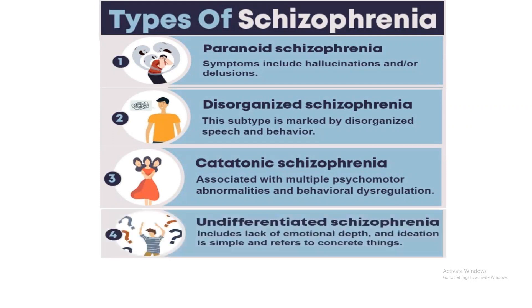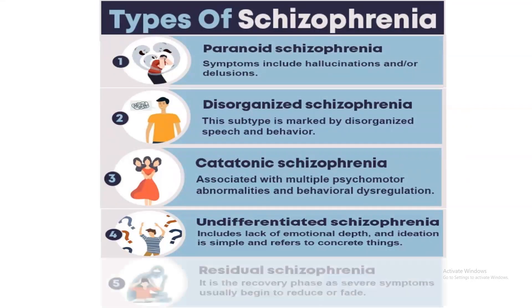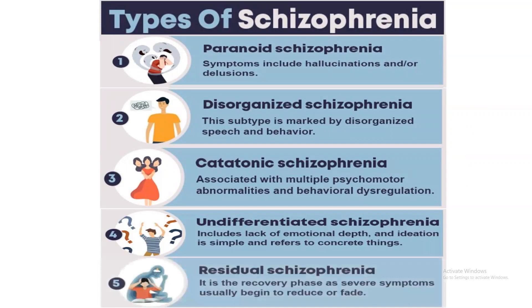Undifferentiated schizophrenia includes lack of emotional depth and ideation is simple, referring to concrete things only. Then there is residual schizophrenia, which is the recovery phase where severe symptoms usually begin to reduce or fade.